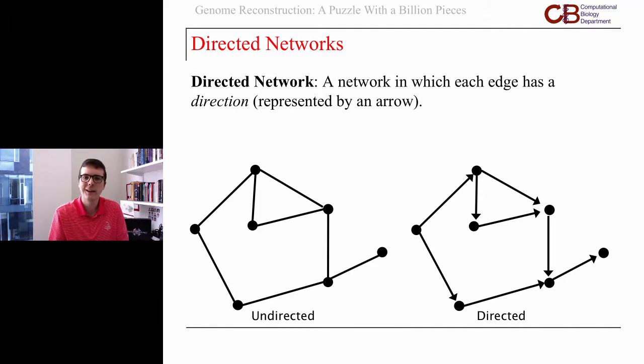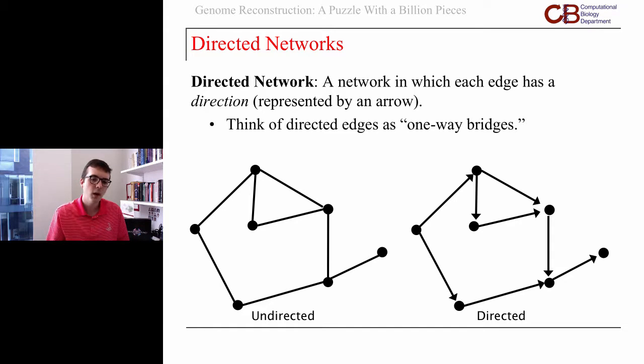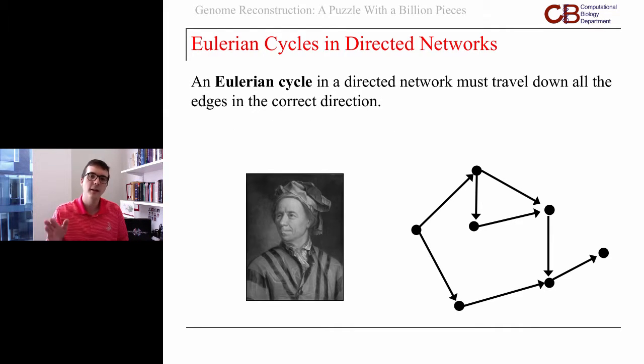We think of the directed edges, for example, as one-way bridges. The network on the right is directed. An Eulerian cycle in a directed network has to travel down all these bridges in the legal direction.